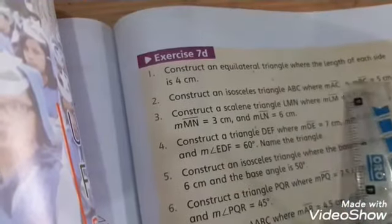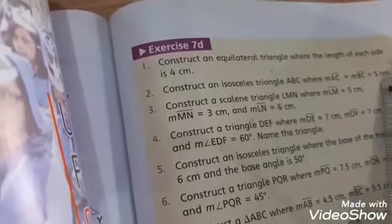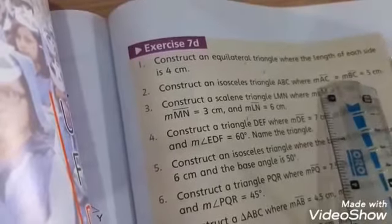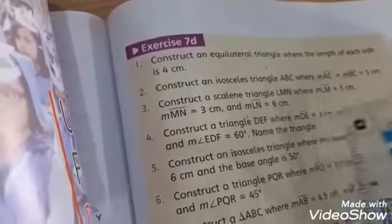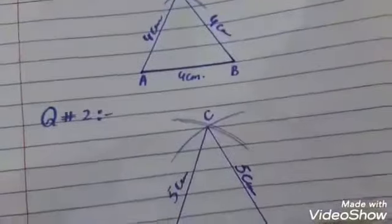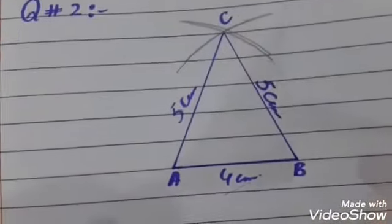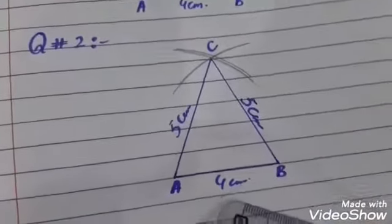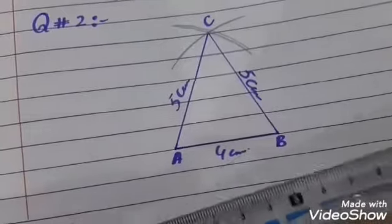Triangle ABC where AC equals BC equals 5 centimeters. The third side measurement is not given, so I will use 4 centimeters for the base AB. First, draw the base line segment.